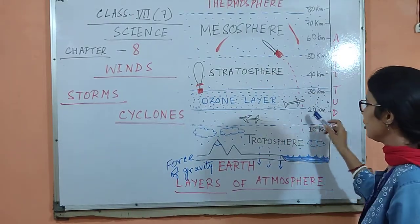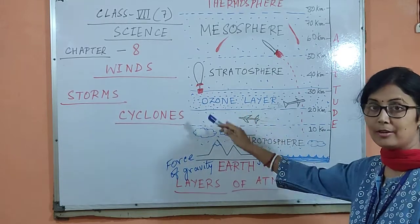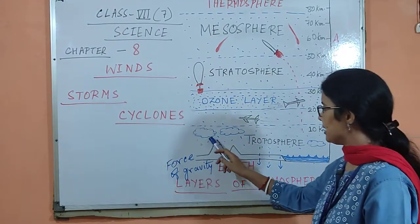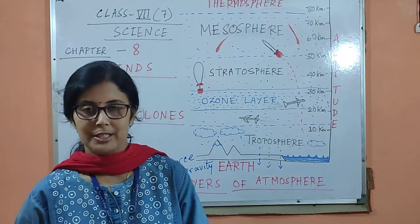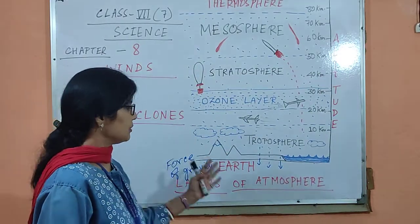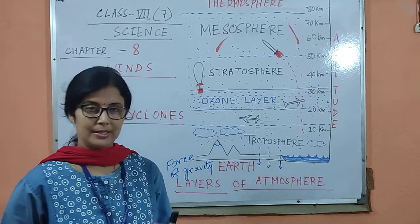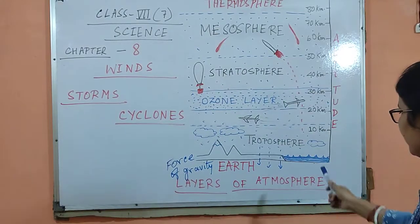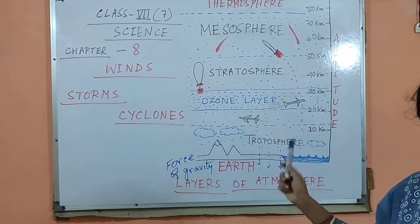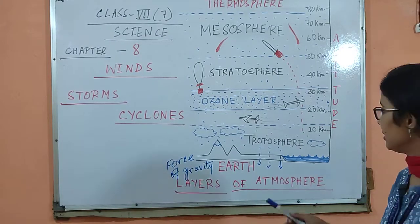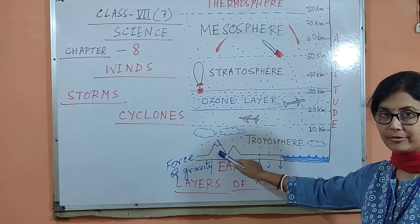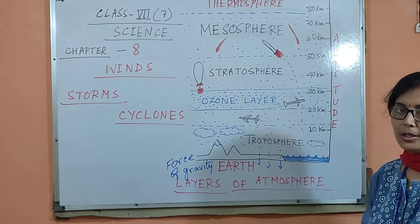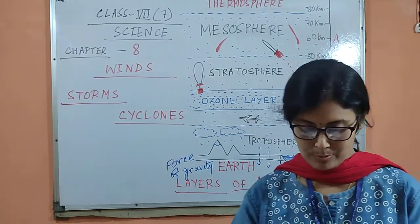So, between 10 to 15 km from the earth surface is the layer of troposphere. In this layer there is formation of clouds and occurrence of rainfall. In junior classes we have read about how clouds are formed from water bodies, and due to unequal heating of the land surface and water bodies, clouds are formed in this layer. The clouds that we see are in the troposphere, the nearest layer.